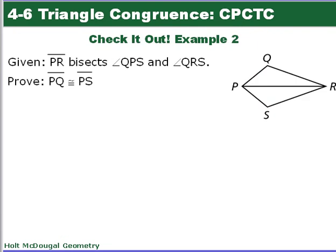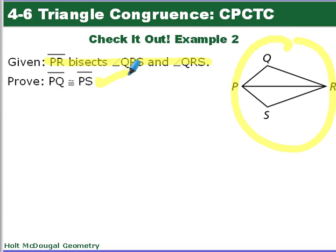Now it's your turn. Mark up your diagram with what you're given, and then prove that segment PQ is congruent to segment PS. First prove the two triangles are congruent, then prove their corresponding parts.